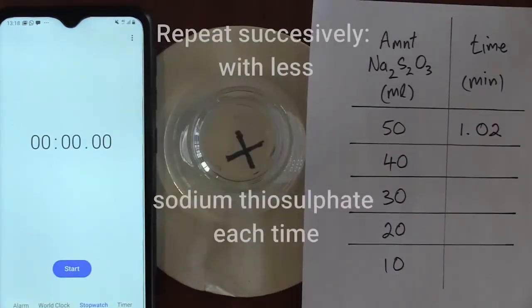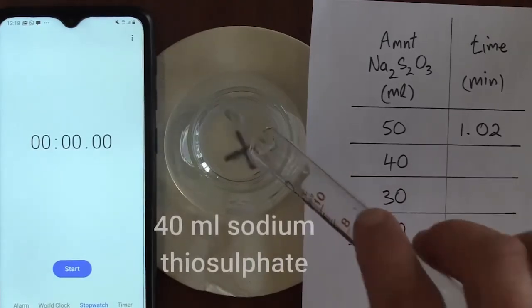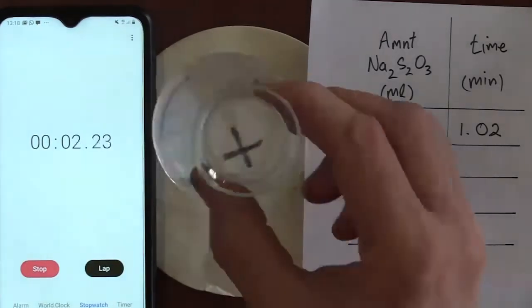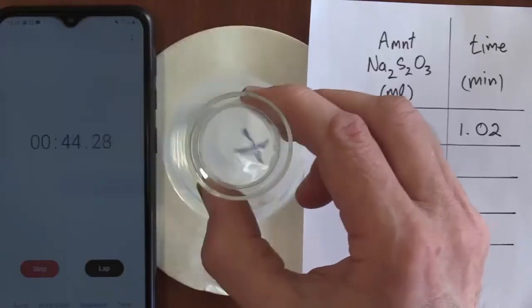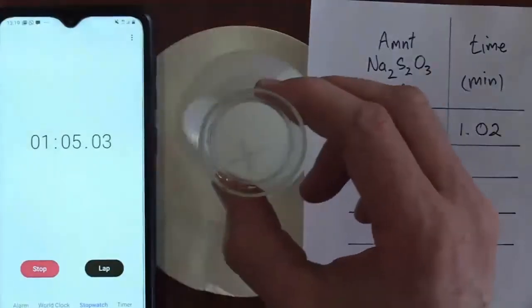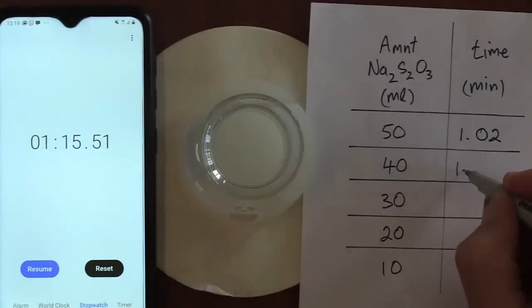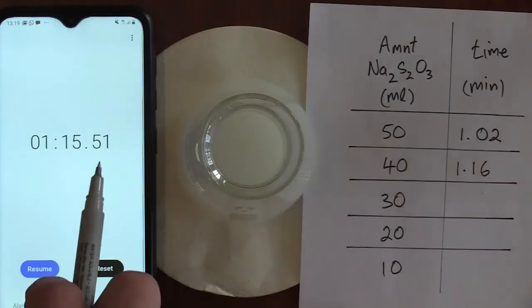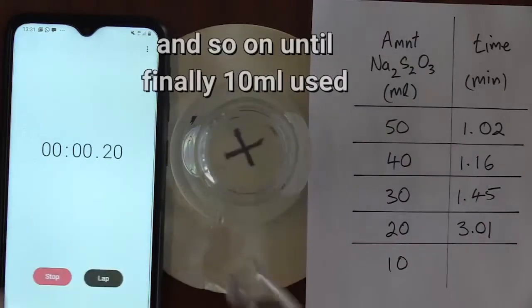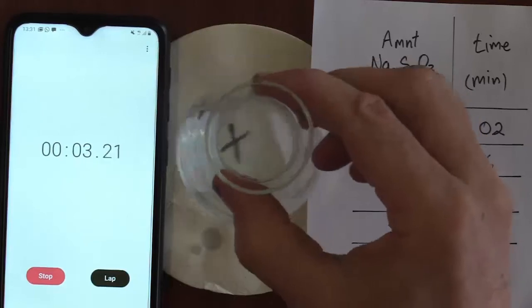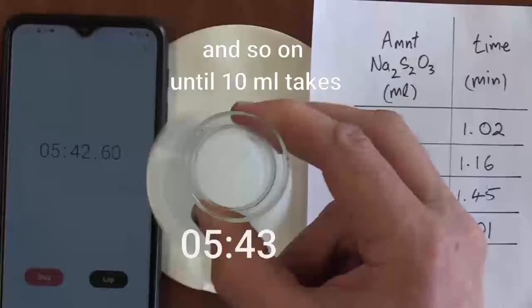We now repeat successively with less sodium thiosulfate each time. Here 40 milliliters. Again we speed it up and we notice the X is no longer visible at 1 minute and 16 seconds. We round the 15.5 one up to 16 seconds. And so on until finally we are only using 10 mils of the reagent. This takes 5 minutes 43 seconds.